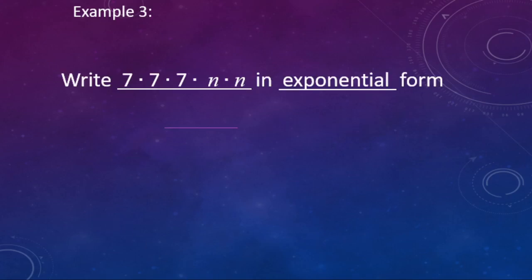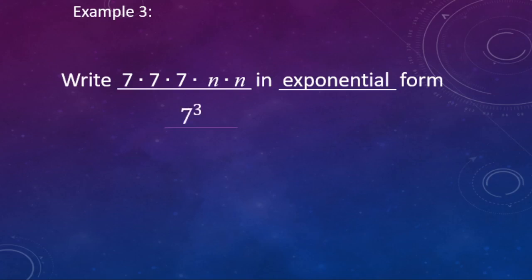Now we're going backwards — we have it written as multiplication and we're going to change it into exponential form. We have three sevens and two n's being multiplied together. Breaking it into chunks: three sevens being multiplied is seven to the third power. Then looking at the n's, two n's being multiplied together is n squared. So the answer is seven cubed times n squared.